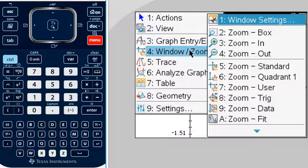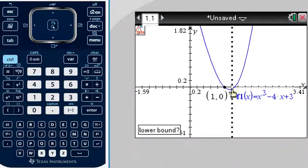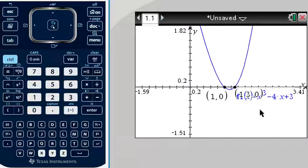Find the other one. Analyze graph, zero, lower bound, upper bound, and there's our other one.